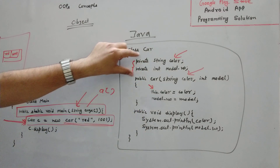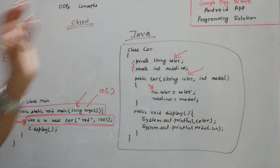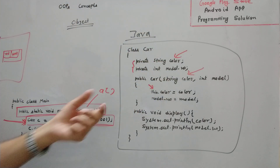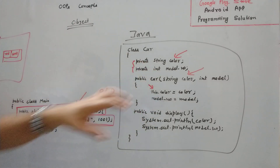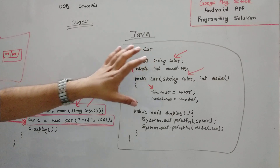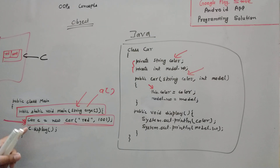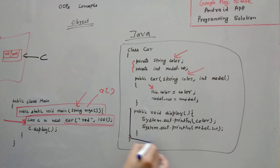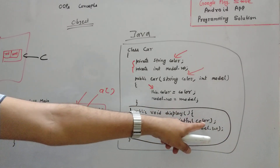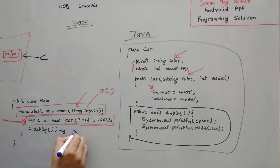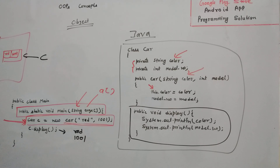We can access all the members and member functions. Members means the instance variables — the data. Member functions means the functions which are defined inside that class. So we can access data members and member functions with the help of the dot operator. 'c' is a reference variable pointing to this object. So 'c.display()' calls the display function, and the display function can display both color and model number. So it will print 'red' and a new line, then '1001'.